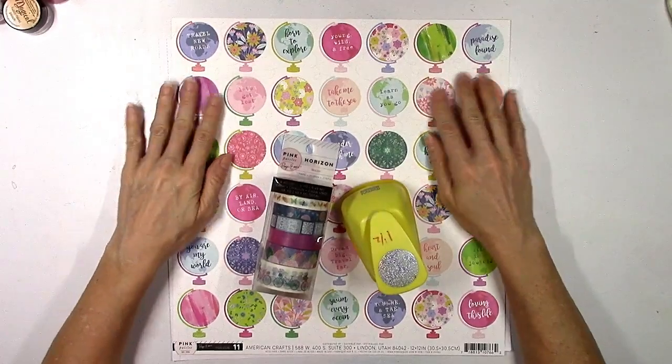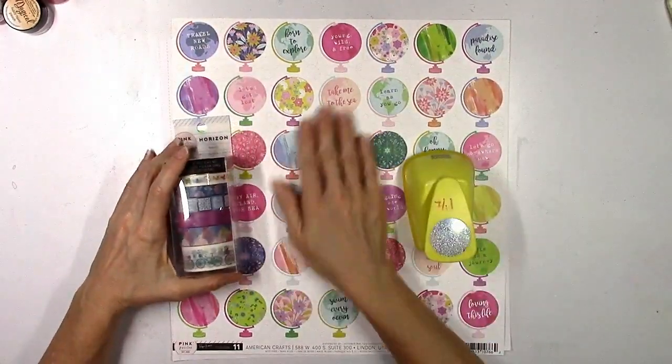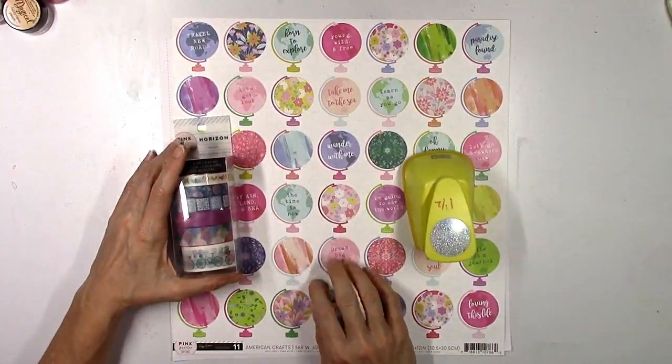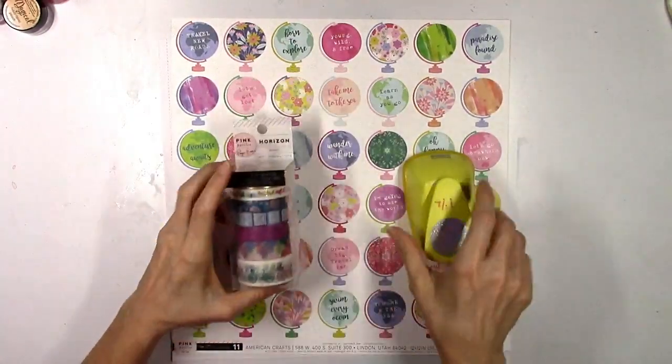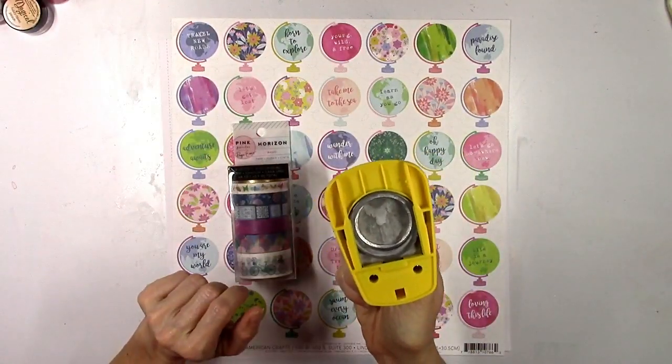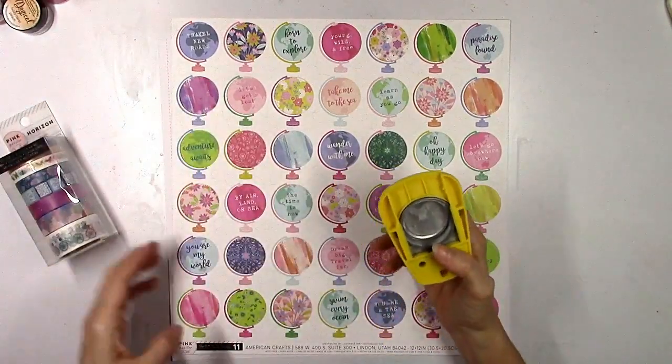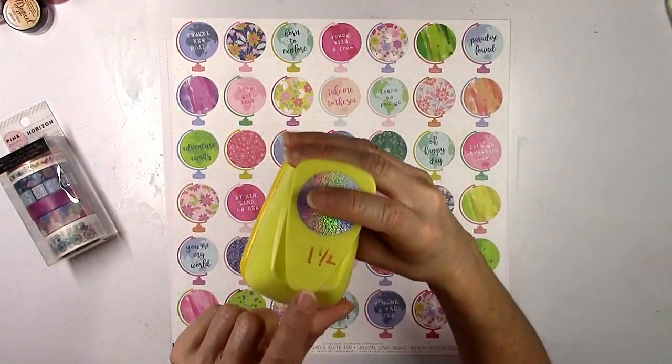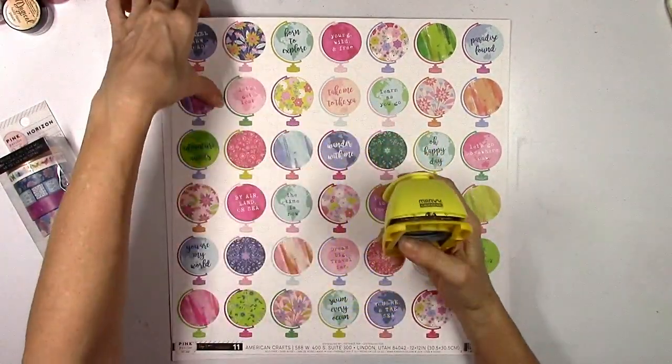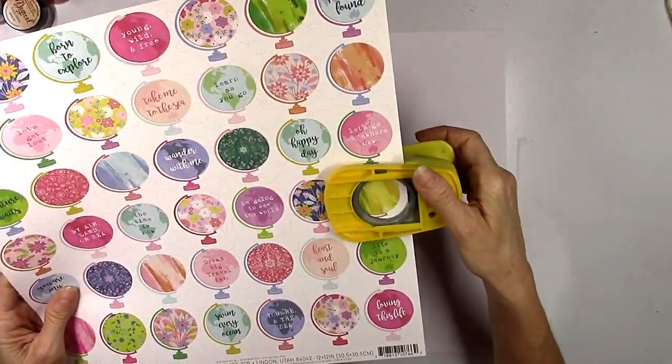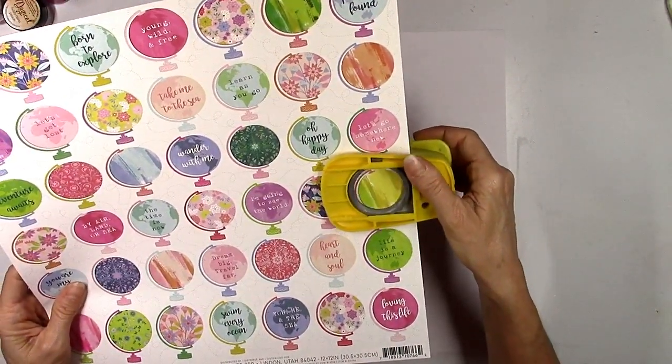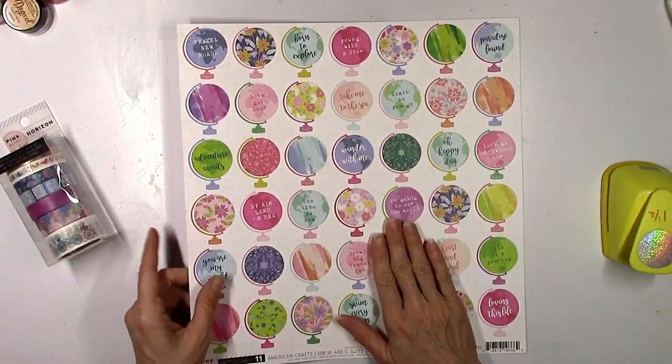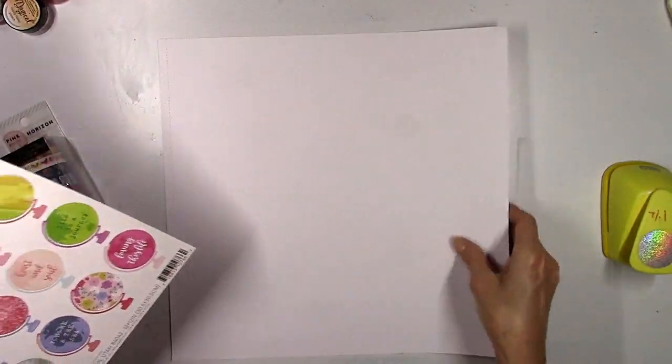I pulled out a couple things that I have not used yet: this beautiful, colorful globe pattern paper and the washi tape. I have not used the washi tape yet so I'm going to challenge myself to use it today. This is going to be another circle layout. I've been on a circle kick lately and this is a one and a half inch circle punch. It's the perfect size to punch out these globes, so I'm going to make circles out of those.